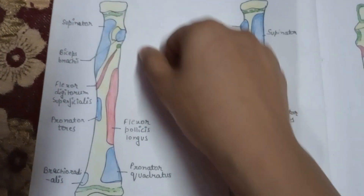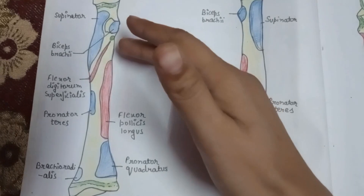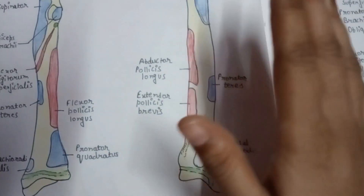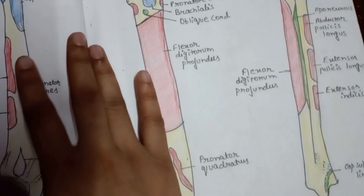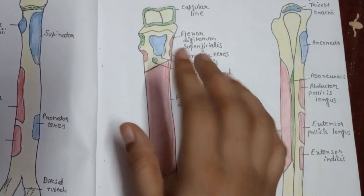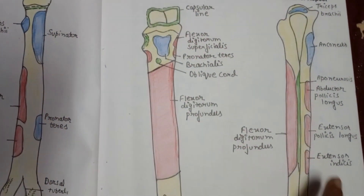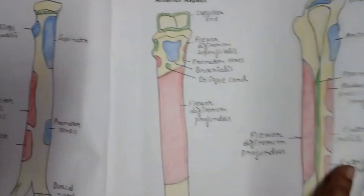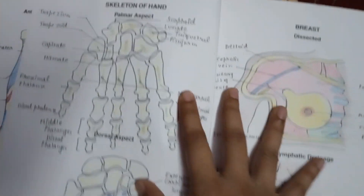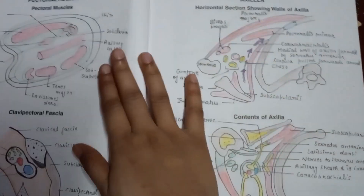One more thing I am going to tell you: origin and insertion — it's very important that you should learn what are the origin and insertion of each and every muscle. Its origin, its insertion — everything is there. The skeleton of hand is also included. It's a really very large book.